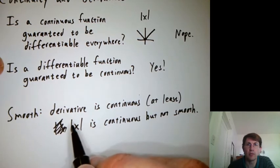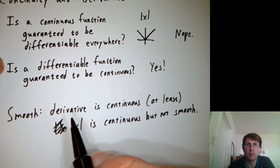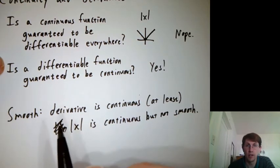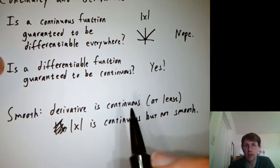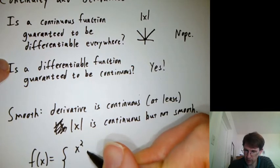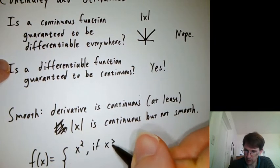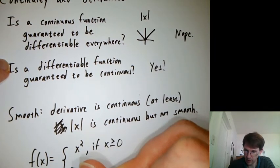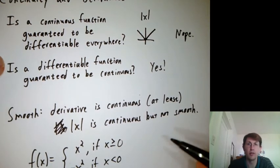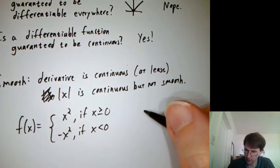What else can we draw about things that might be continuous and differentiable but not smooth? Or other important examples? Let's consider f of x equals x squared if x is bigger than or equal to zero, and negative x squared if x is less than zero. Let's draw that.